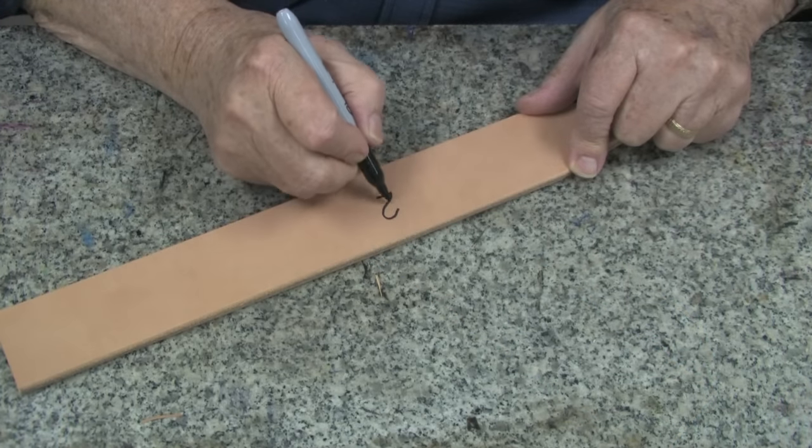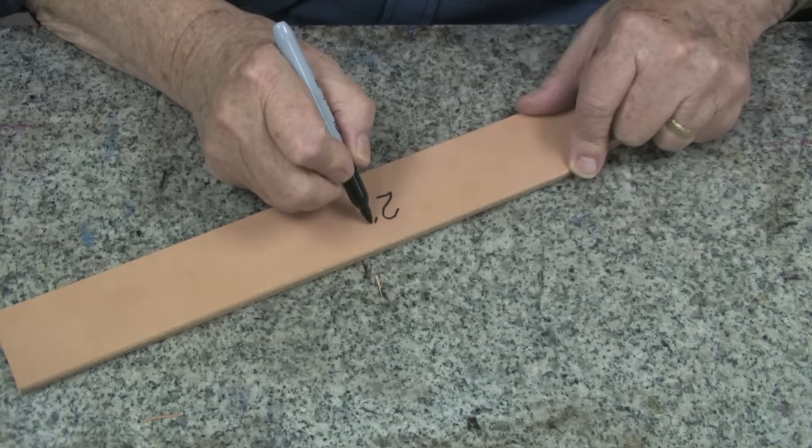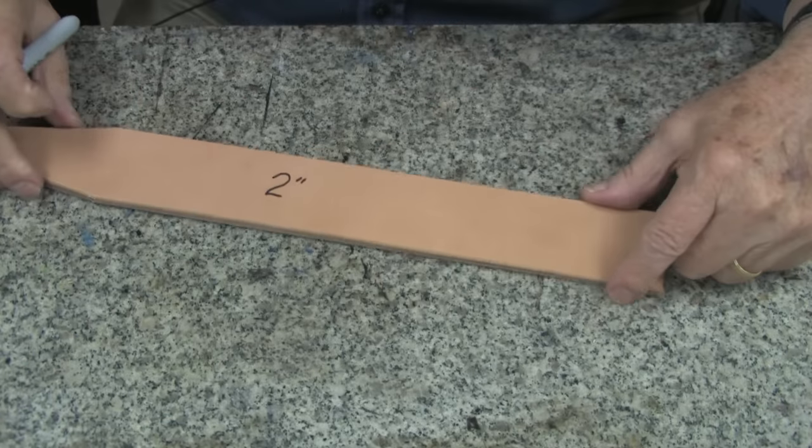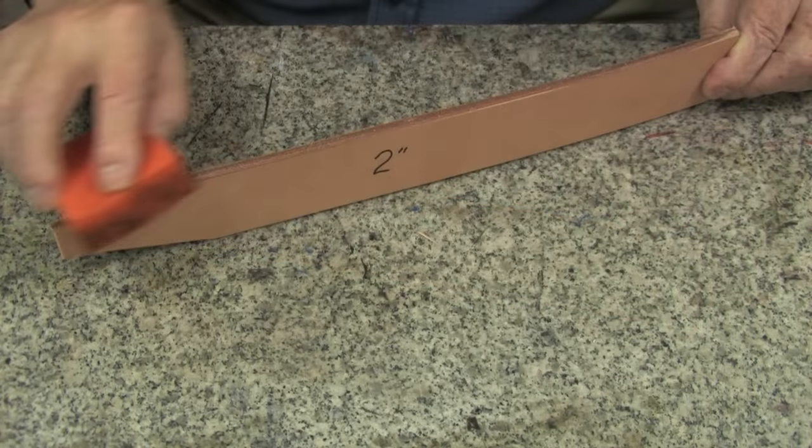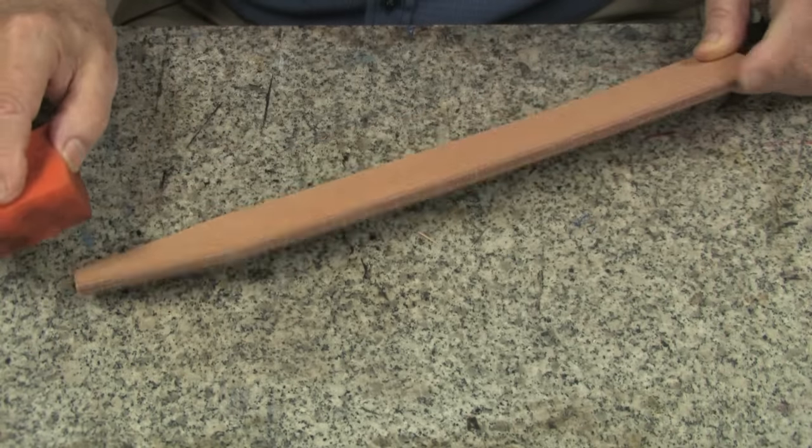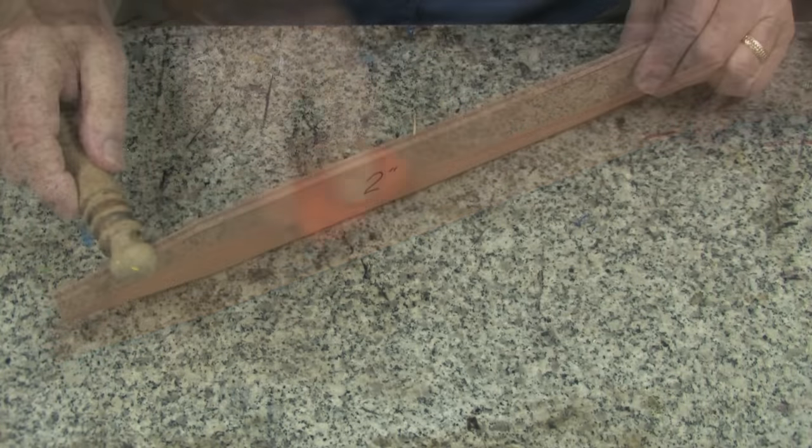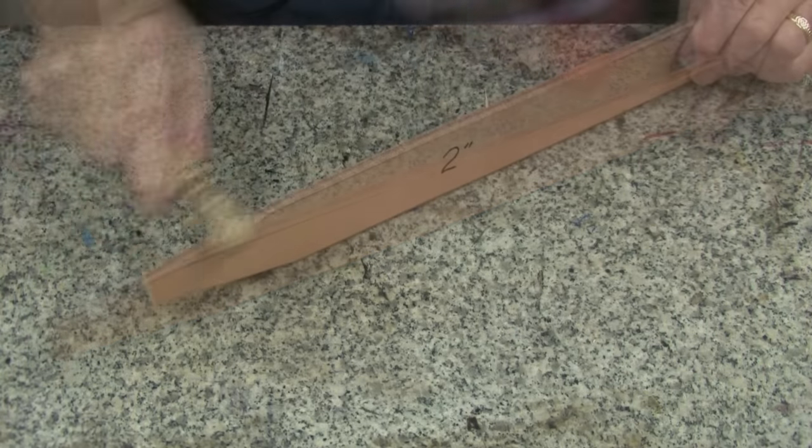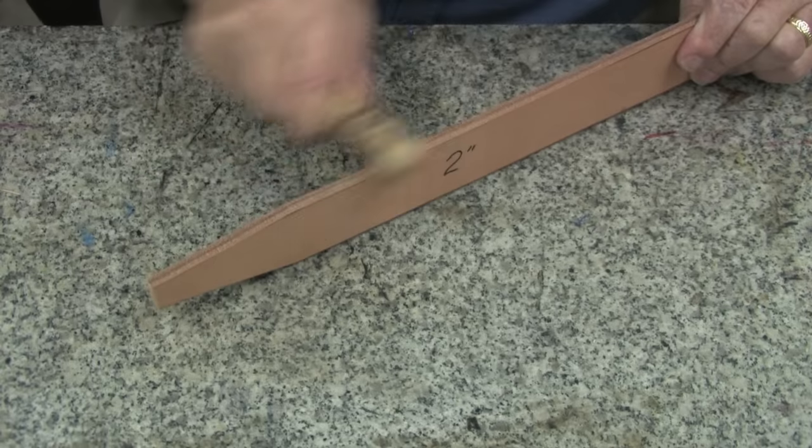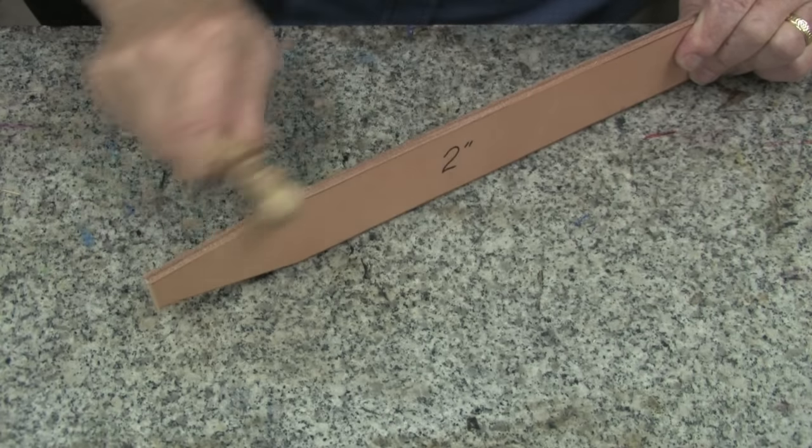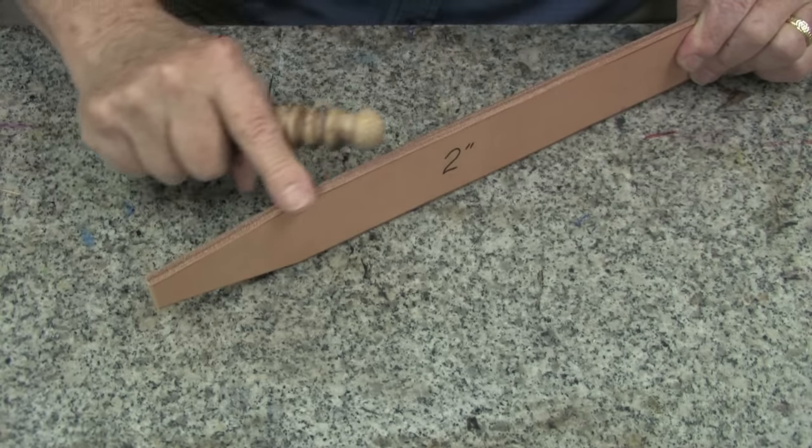And now with a felt tip marker, I will mark it for the size we are making. Next, I will dampen the edges, both sides, and then with an edge slicker, I will slick the edge until it's nice and smooth.